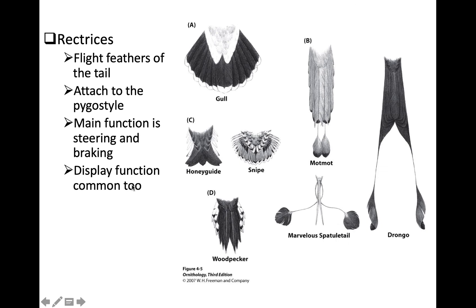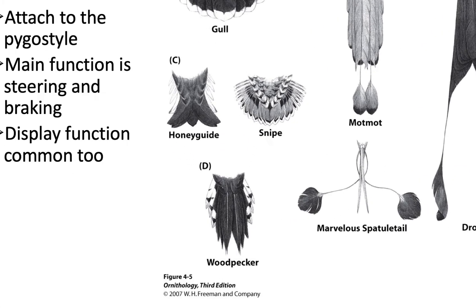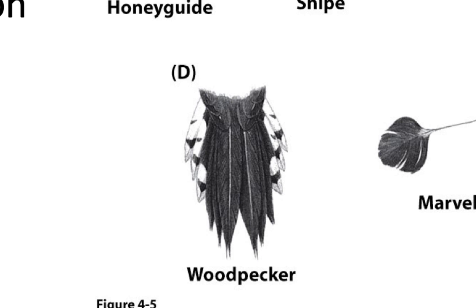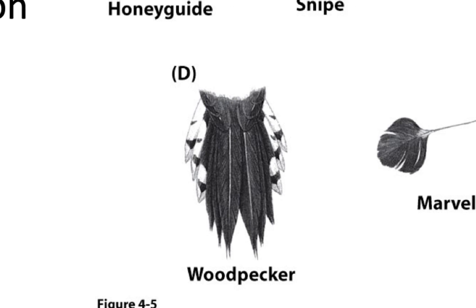Rectrices are the flight feathers of the tail, attached to the fused caudal vertebrae forming the pygostyle. While tail feathers generate some lift, their main flight function is steering and braking. They're also often highly elongated or modified for visual display or even sound production. In woodpeckers and creepers, rectrices are highly stiffened and used almost like a third leg to brace against a trunk while moving up and down.